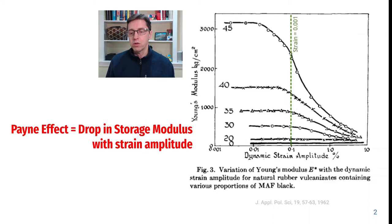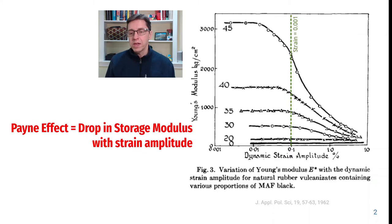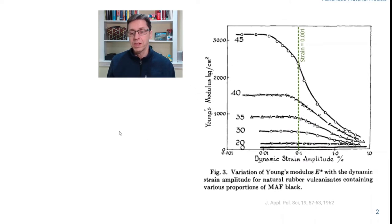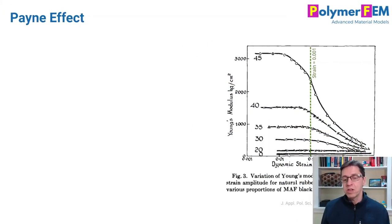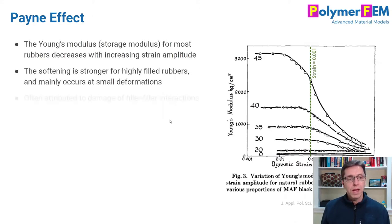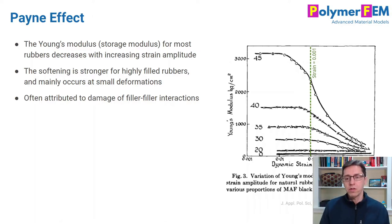This drop in storage modulus with strain amplitude can be a real problem because linear viscoelasticity cannot predict this behavior. The Payne effect is stronger for filled rubbers and is often attributed to filler-filler interactions: filler particles or aggregations interact and break up as the rubber deforms. It's considered a damage effect, but it manifests as viscoelastic behavior.